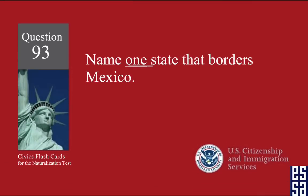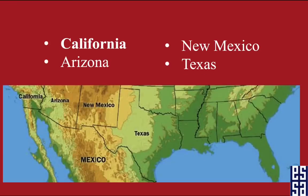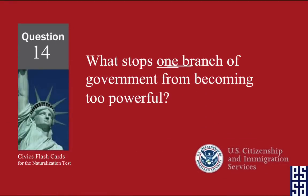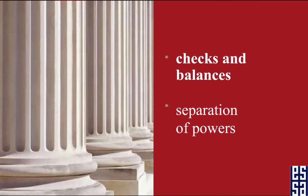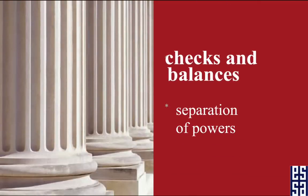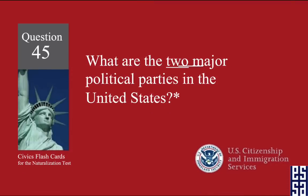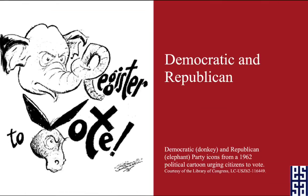Name one state that borders Mexico. California. What stops one branch of government from becoming too powerful? Checks and balances. What are the two major political parties in the United States? Democratic and Republican.